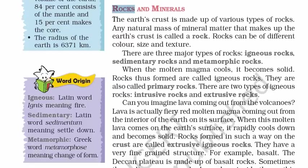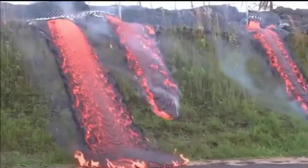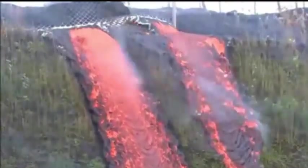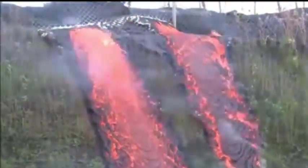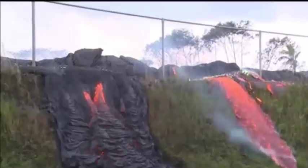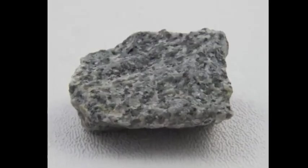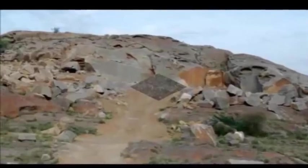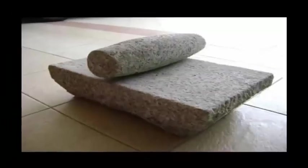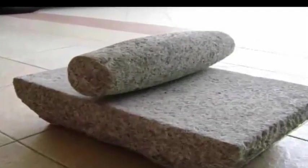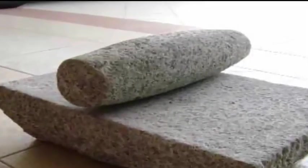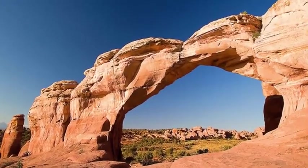Now let's read about rocks. The earth's crust is made up of various types of rock, which can be of different color, size, and texture. The major types of rocks are igneous rocks, sedimentary rocks, and metamorphic rocks. Imagine lava coming out from a volcano — it is fiery red molten magma from the interior of the earth. When this hot molten material cools down rapidly on the earth's surface and becomes solid, the rock formed is called igneous rock. In everyday terms, igneous rock is basically granite, like the grinding stone used to make pastes of masalas and other homemade food items.